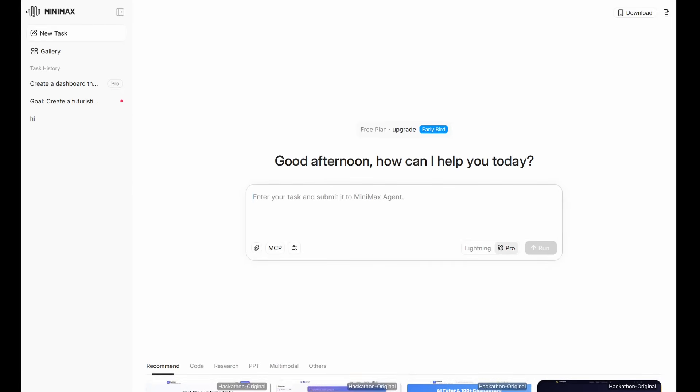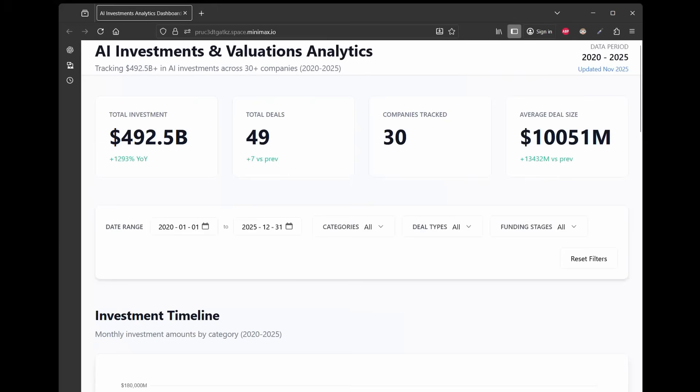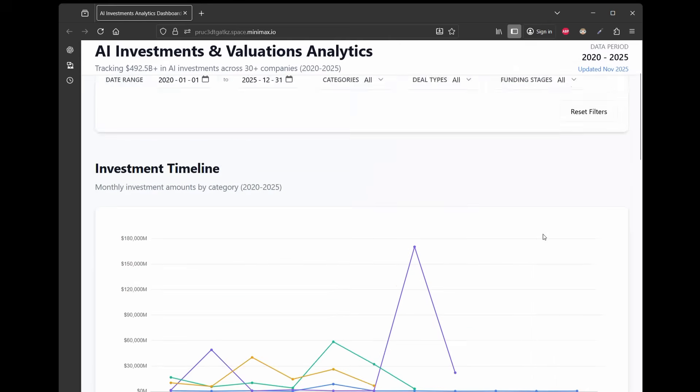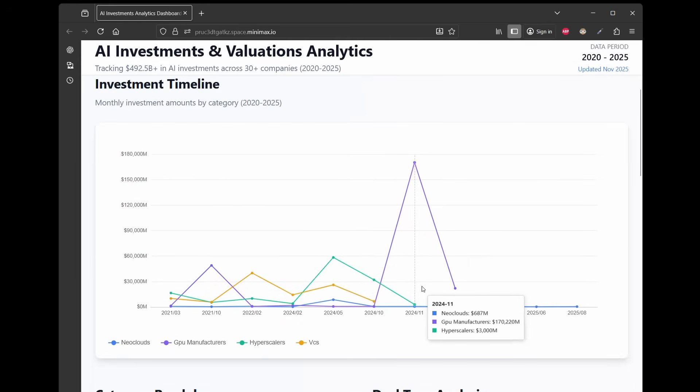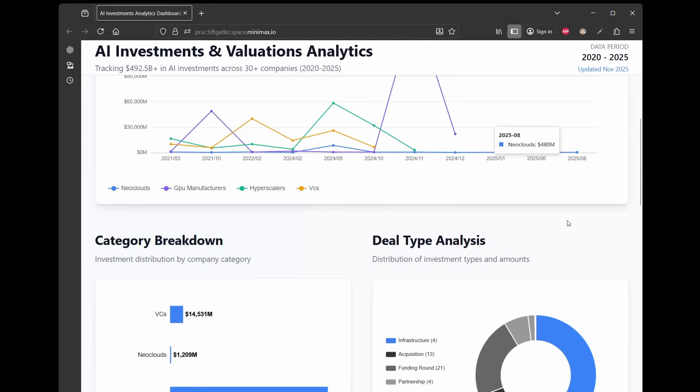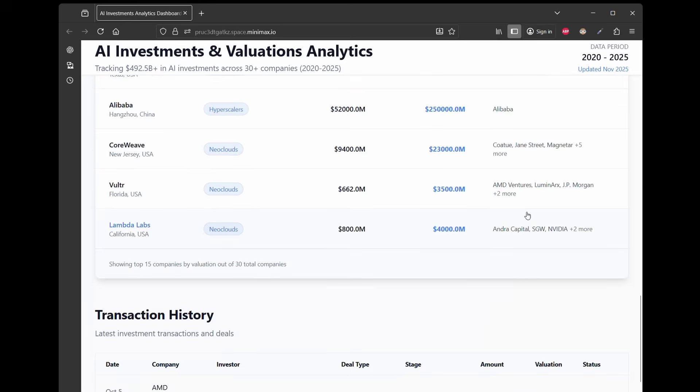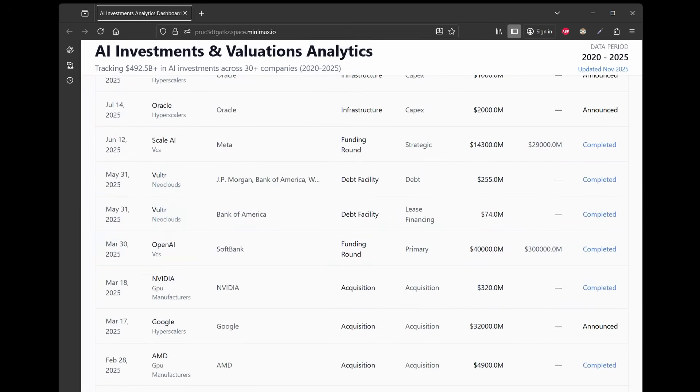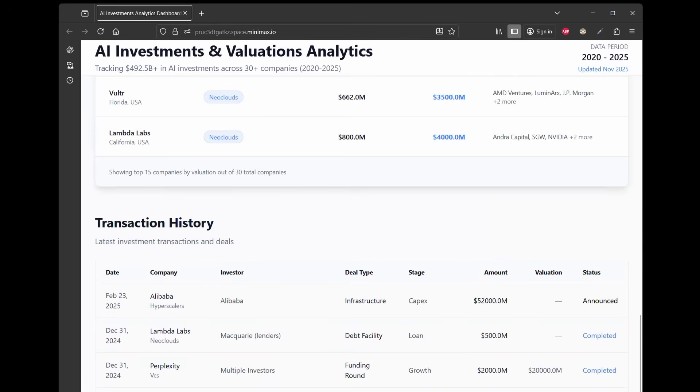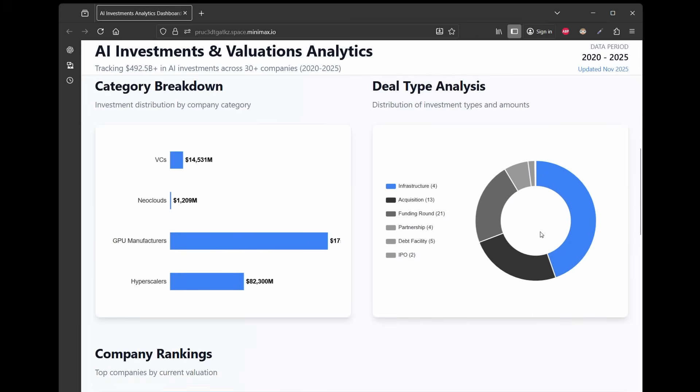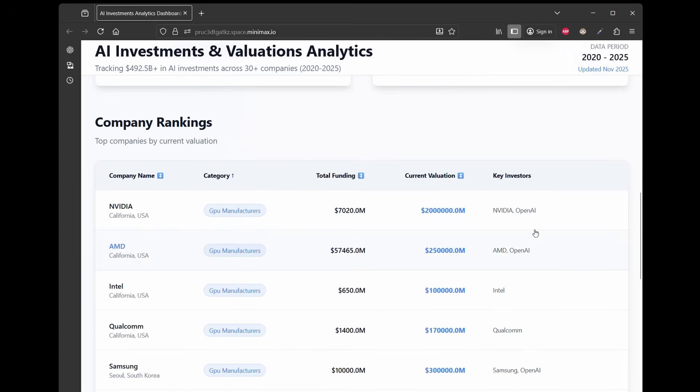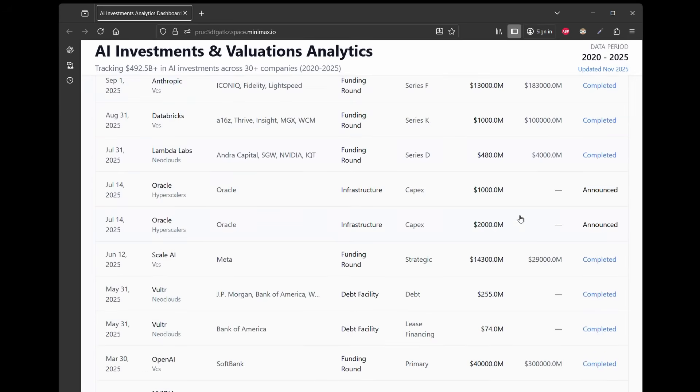Okay, now let's look at how the model actually performs in the real world by using it in the Minimax agent. I tasked the Minimax agent to write me a dashboard that runs deep research to gather all publicly available information on AI companies and how funding has been going on from company to company, including venture capitals, hyperscalers, new clouds, and more. And as you can see, Minimax agent was able to complete this dashboard just as I had asked, demonstrating the speed, cost, and its ability to reason through a somewhat exhaustive task.